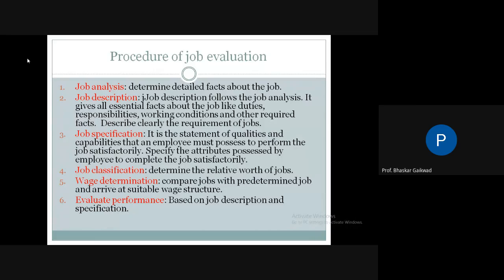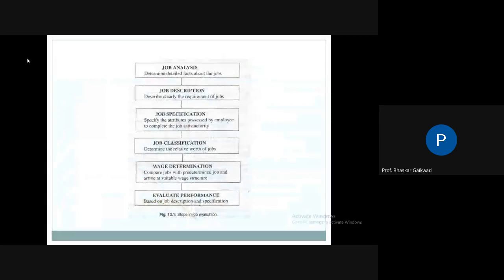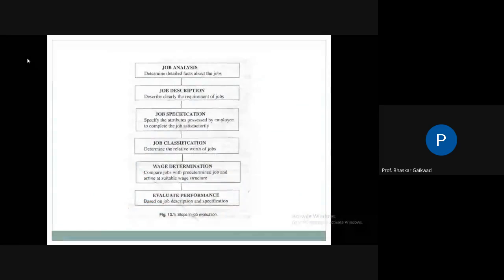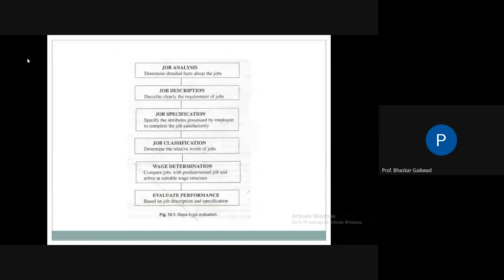A chart is given summarizing the steps in job evaluation — the same six points: job analysis determines the detail facts about the job, followed by job description, job specification, job classification, wage determination, and performance evaluation. You can refer to either the previous points or the chart — both cover the same content related to job evaluation.